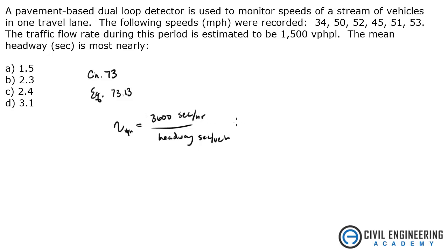So if you rearrange all of this, you can get your headway, I will just call it H, is equal to 3600 divided by the flow rate that was given right here. So this problem, don't let it confuse you, you might be thinking you need to get the mean of these speeds, but all you need to do is solve for the headway.